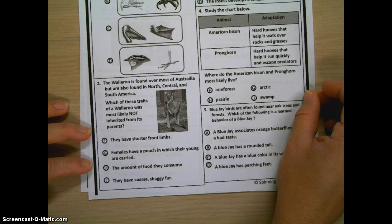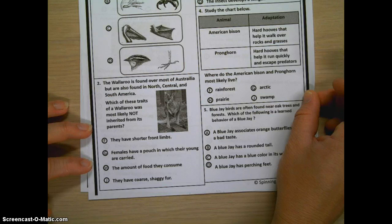F, they have shorter front limbs. G, females have a pouch in which their young are carried. H, the amount of food they consume. J, they have coarse, shaggy fur.